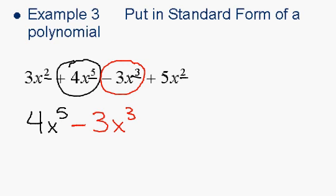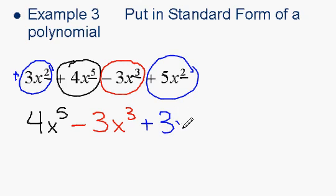And then we have two terms with x squared. So we circle both of them and rewrite them. This is really a positive 3x squared, so we write adding 3x squared. And then this is adding 5x squared.